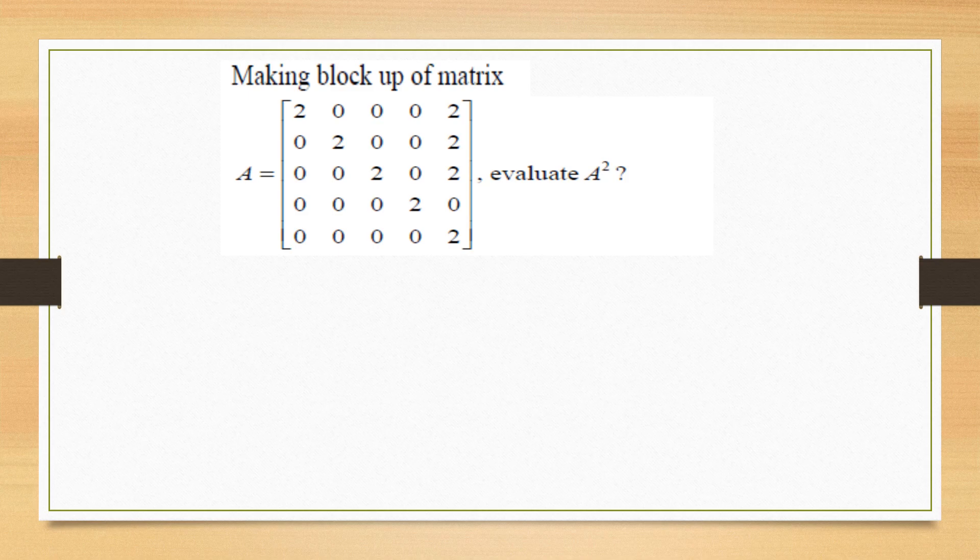Here A is a matrix which is of order 5 by 5. We have to evaluate A square. It will be easy if we will make its partition.